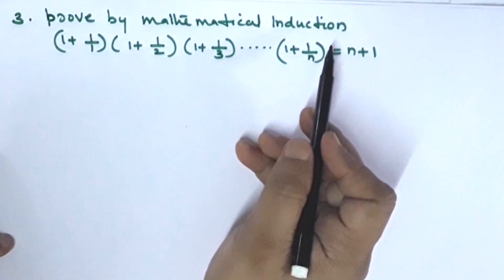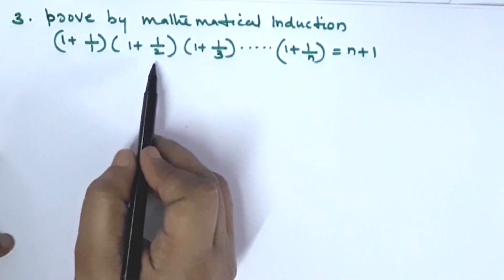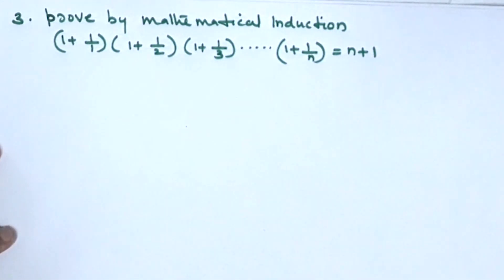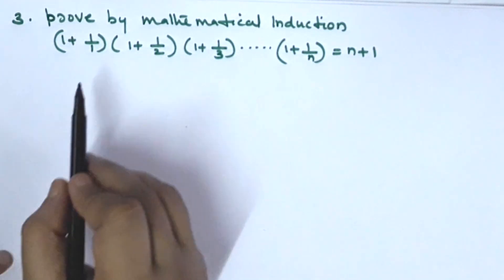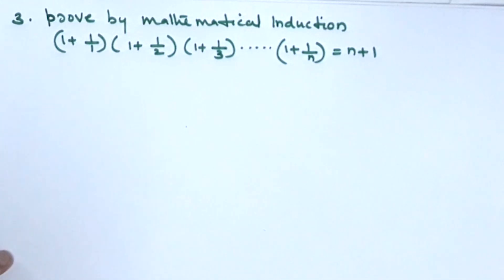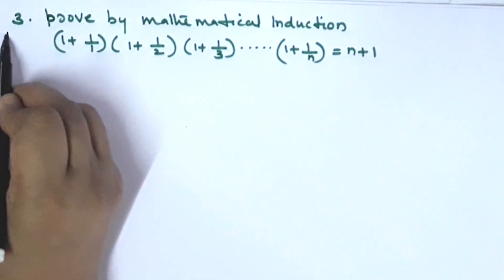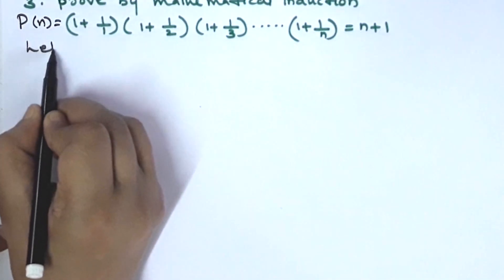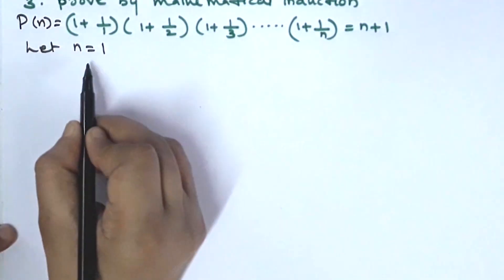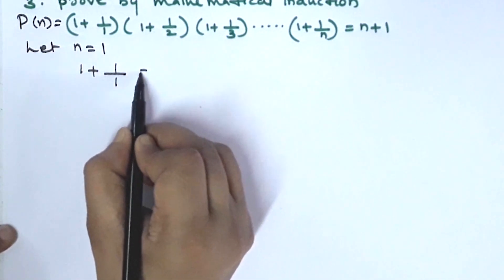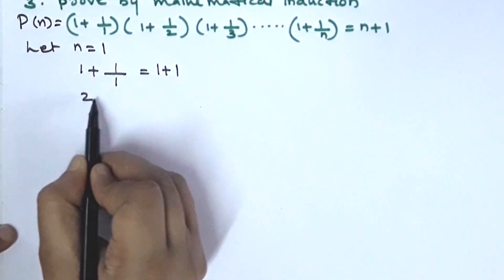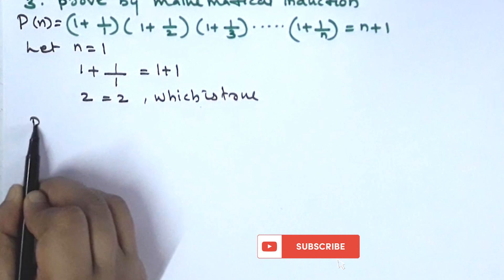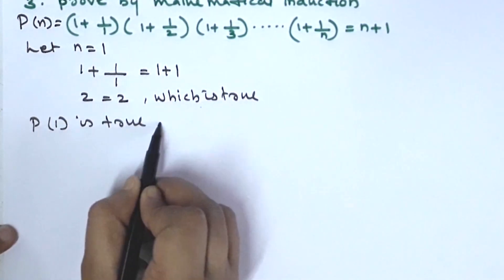Prove by mathematical induction: (1 + 1/1)(1 + 1/2)(1 + 1/3)···(1 + 1/n) = n + 1. For n equal to 1, P(1) is true — which is true. P(1) is true.